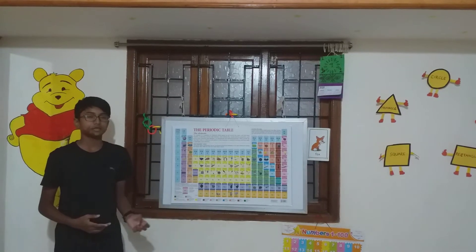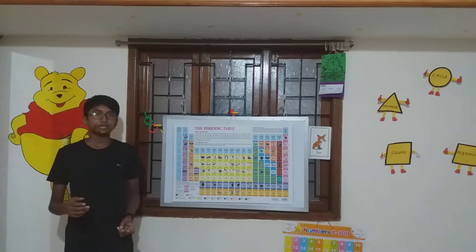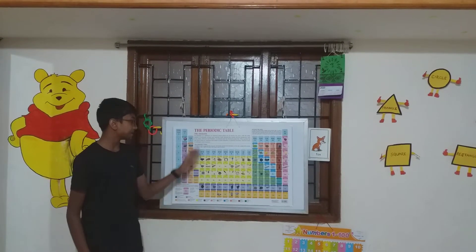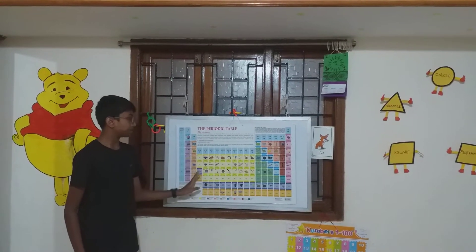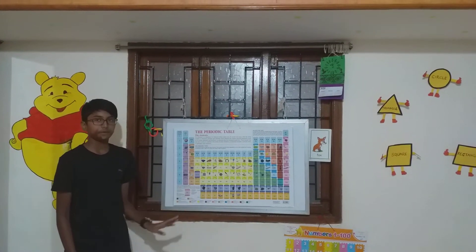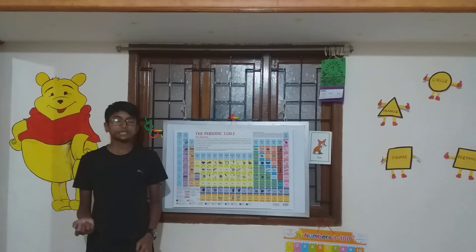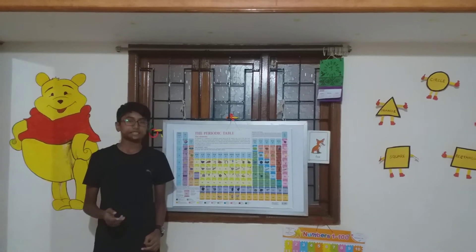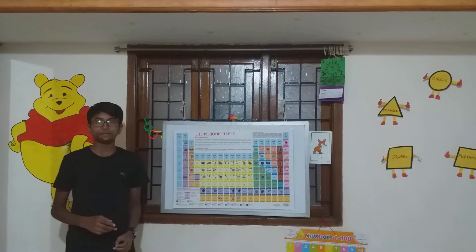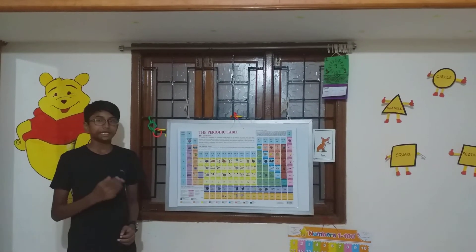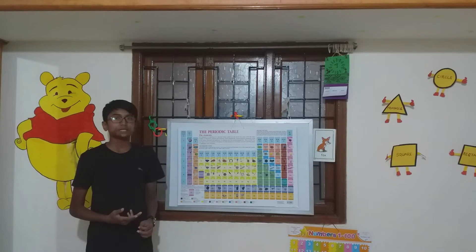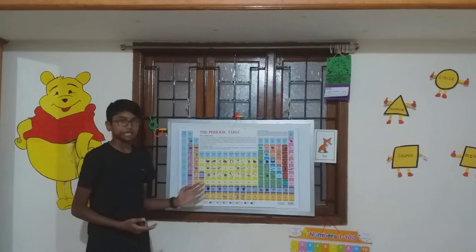Alkaline earth metals are present in group 2 of the periodic table. They are considered as the second family of the reactive metals in the periodic table.